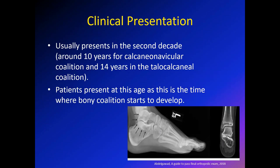Clinical presentation usually occurs at the start of the second decade. It usually starts around the age of 10 years in cases of calcaneonavicular coalition, and around 14 years in cases of talo-calcaneal coalition, which we refer to as subtalar coalition. This is the age at which the coalition starts to become stiff and develop a bony bridge between the two bones, so symptoms begin to appear.